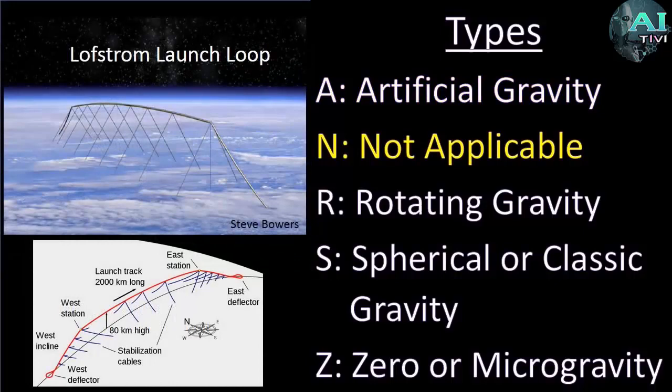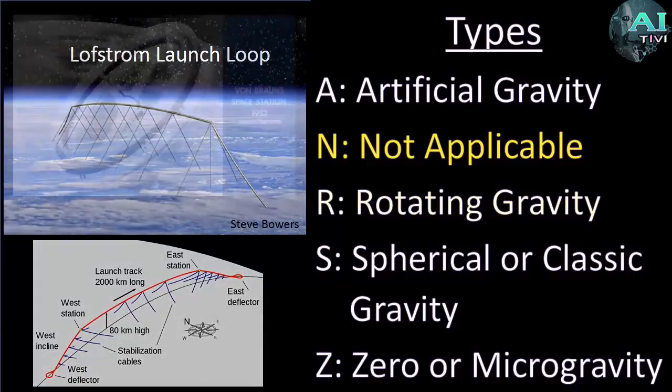We also have a lot of situations where it simply won't apply, like the Lofstrom launch loop. The gravity that's there is really not related to the object, or there's simply no reason why we care about the gravity there, like a giant space gun or a rail gun. It has nothing to do with the purpose of the object.